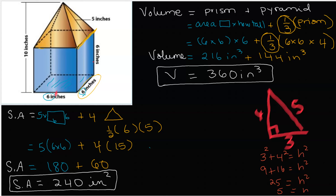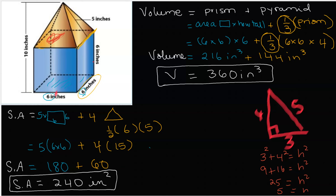We want to make sure we understand the concept of surface area as the boundary of the shape. That is why we did not count the top of the cube — that top is not really there because it is covered by the pyramid. So we only have five blue sides, and on top we have four triangles. Those are the surfaces of the shape, and that is the surface area.